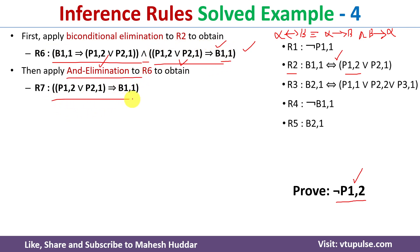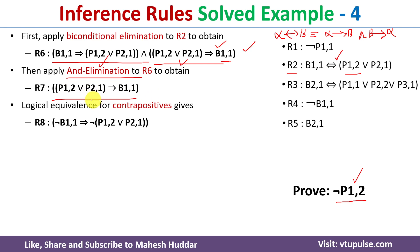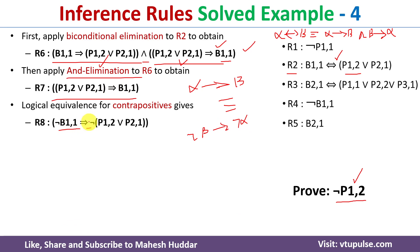I apply AND elimination to retain the second clause. Now, because I want negation of B11 on the left side of the implication, I apply the contrapositive rule. The contrapositive of alpha implies beta is: negation of beta implies negation of alpha. So in this case, we get negation of B11 implies negation of (P12 or P21).